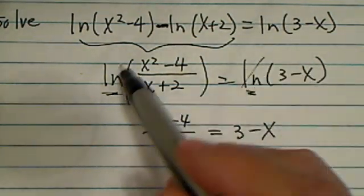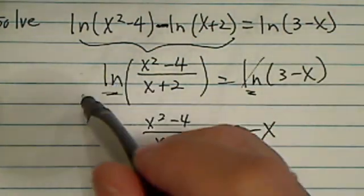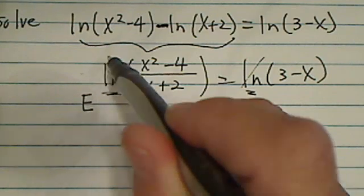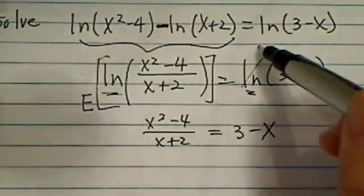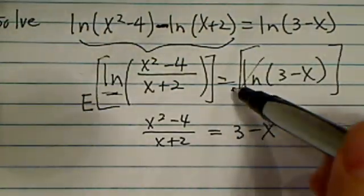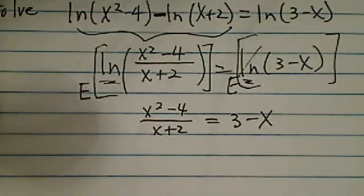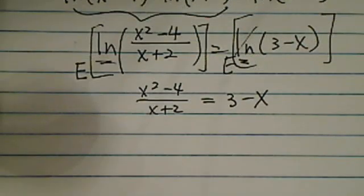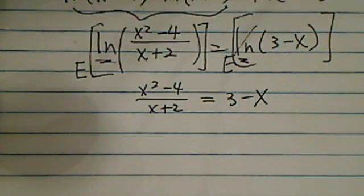Now some of my students say, does that mean it cancels? Technically not really, because all you really did is you raised the whole thing, left side and right-hand side, to the e to the power. That's how the natural log, quote-unquote, disappeared, but it didn't really just cancel.